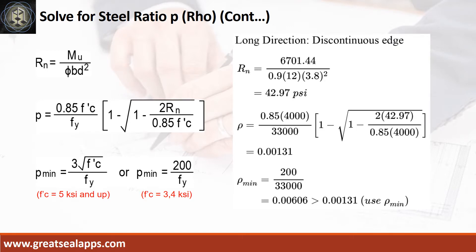Long direction, discontinuous edge: moment equals 6,701.44 inch-pounds, resistance factor 0.9, b equals 12 inches, d equals 3.8 inches. Beam design ratio RN equals 42.97 PSI, reinforcement ratio ROE equals 0.00131. Use ROE minimum of 0.00606.